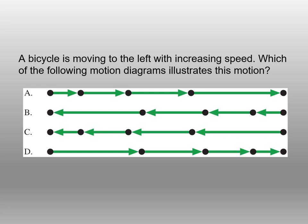Chapter 2 Preview. Let's stop to think. A bicycle is moving to the left with increasing speed. Which of the following motion diagrams illustrates this motion? First, recognize that there are two options moving to the left. If an object is moving fast, the vector shown is long. If the object is slowing or coming to a stop, the line gets shorter. If you chose B, you are correct.